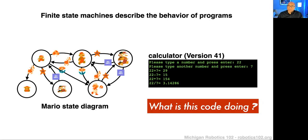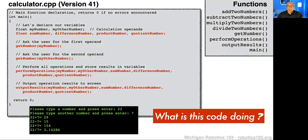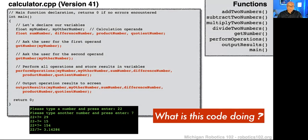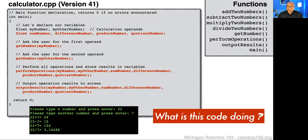If we want to start thinking about what a finite state machine will look like for our current calculator, we should go back and ask what was this code doing — where we ask for two numbers, perform arithmetic operations on those numbers, and output those to the screen. When we look at that code, it's nicely lined up into just four function calls. Those four function calls give us a structure and organization that we can turn into a finite state machine.